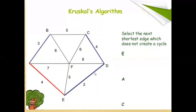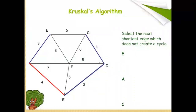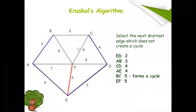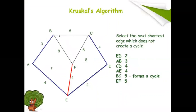The first minimum cost edge is ED=2. The next minimum cost edge is AB=3. Next is CD=4. Next is AE=4. The next minimum cost edge is five. Suppose if you are selecting BC, it may form a cycle. In a spanning tree there is no cycle, so reject BC.